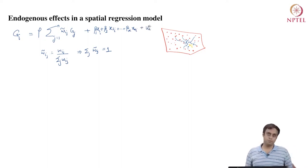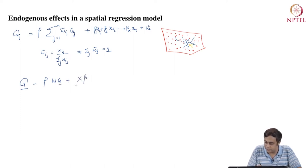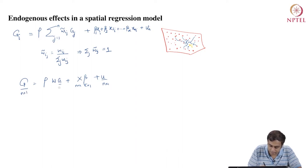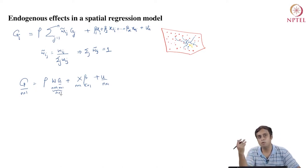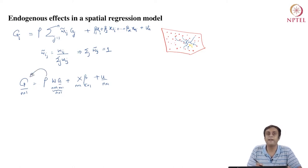This is the regression model that we are used to. In matrix form, we can write this as g = ρWg + Xβ + u, where X is an n×k matrix, β is a k×1 vector, u is an n×1 vector, and g is an n×1 vector. Beta and rho are both model parameters. Rho specifies the effect on location i due to its neighbors j.